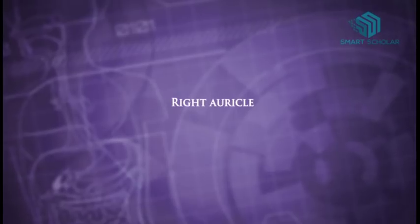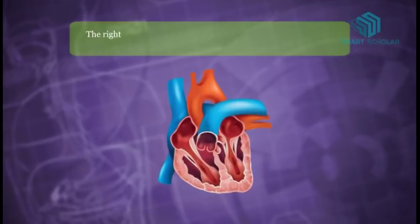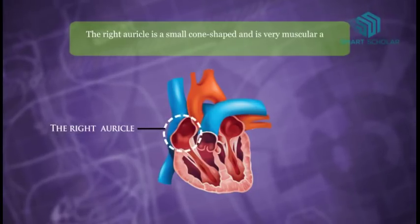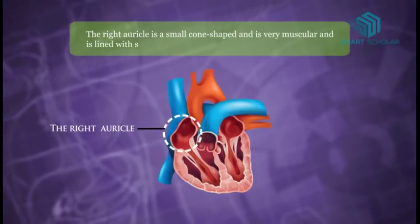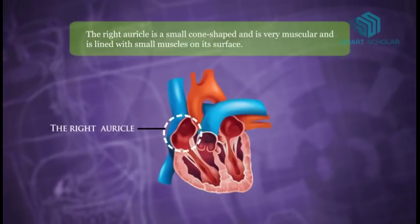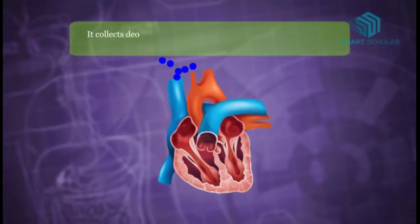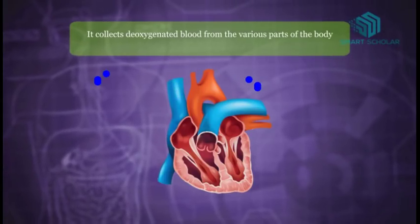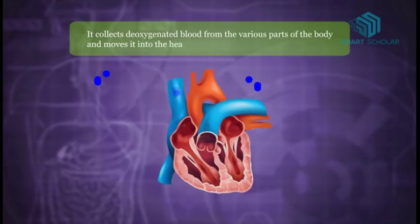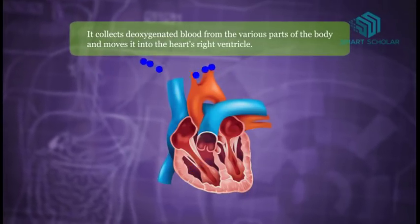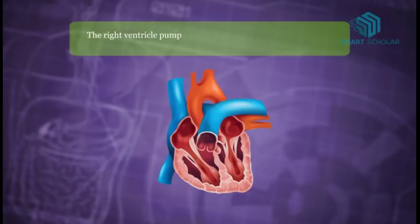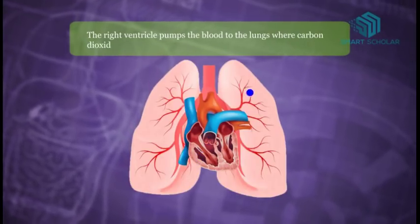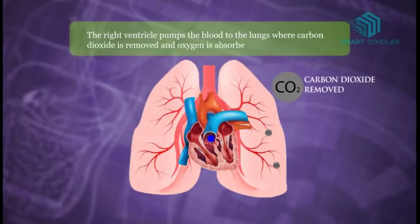The right atrium is small, cone-shaped, and very muscular, and is lined with small muscles on its surface. It collects deoxygenated blood from the various parts of the body and moves it into the heart's right ventricle. The right ventricle pumps the blood to the lungs where carbon dioxide is removed and oxygen is absorbed.